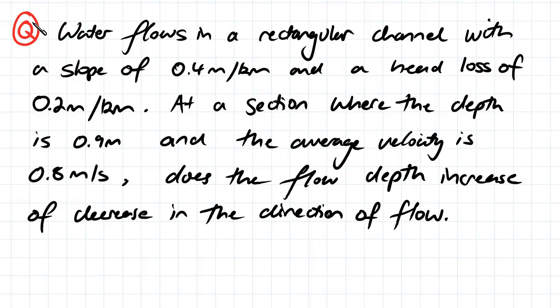Our question: water flows in a rectangular channel with a slope of 0.4 meters per kilometer and a head loss of 0.2 meters per kilometer. At a section where the depth is 0.9 meters and the average velocity is 0.8 meters per second, does the flow depth increase or decrease in the direction of flow?